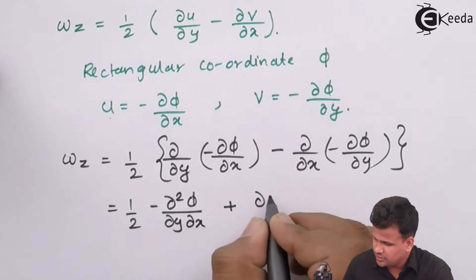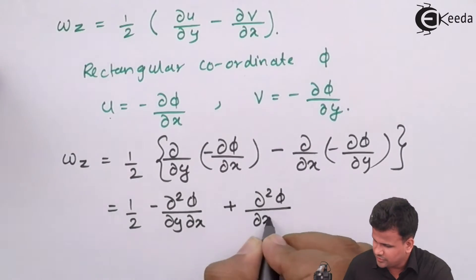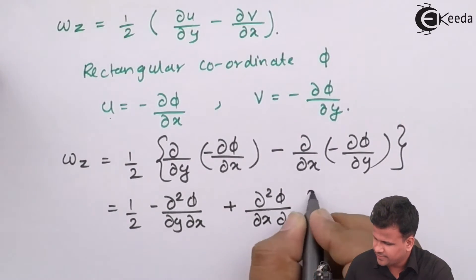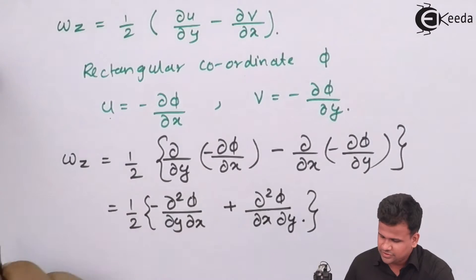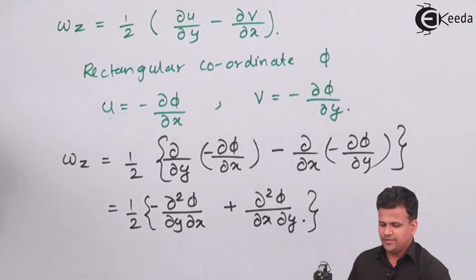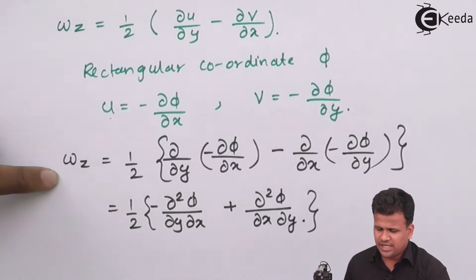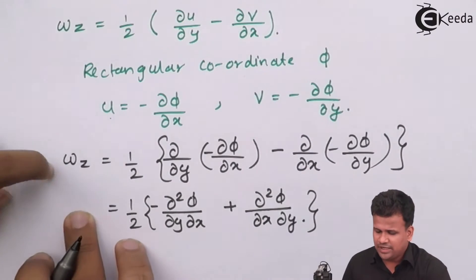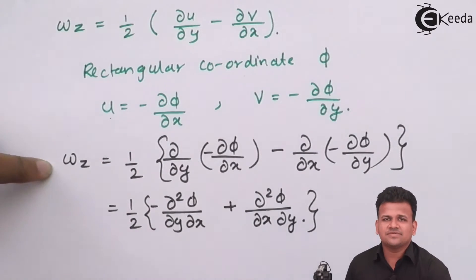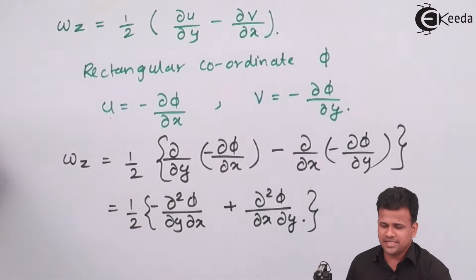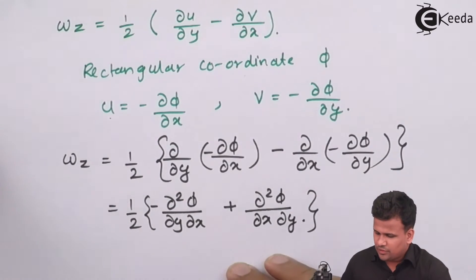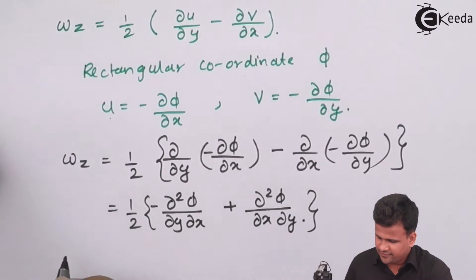This results in half times (minus dou squared phi by dou y dou x plus dou squared phi by dou x dou y). This equation applies to any flow — rotational or irrotational. For irrotational flow this part will be zero, while for rotational flow omega_z will have some non-zero value.